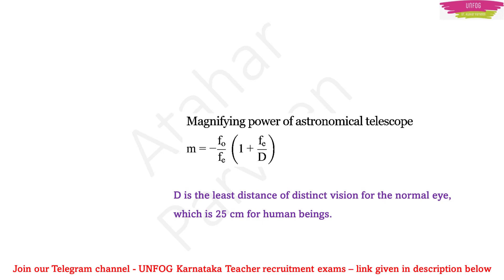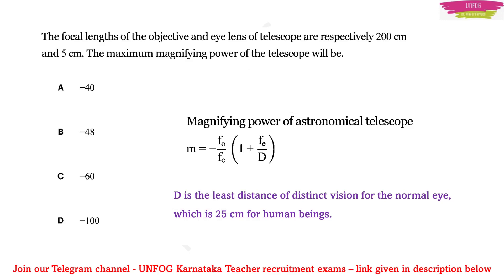Based on this formula, we may expect a question. For example: The focal lengths of the objective and eye lens of a telescope are respectively 200 cm and 5 cm. What is the maximum magnifying power of the telescope?